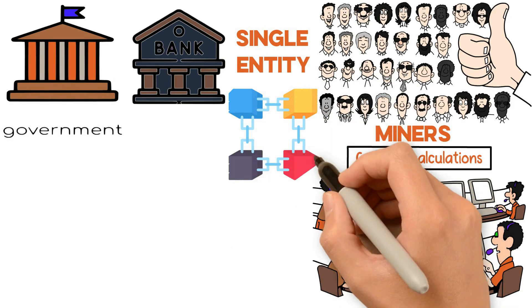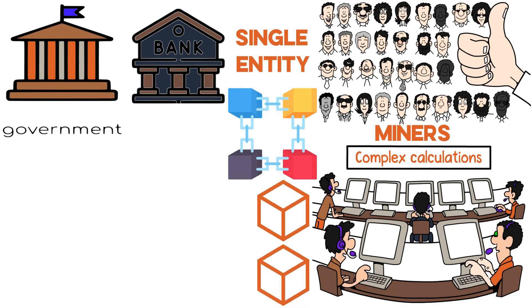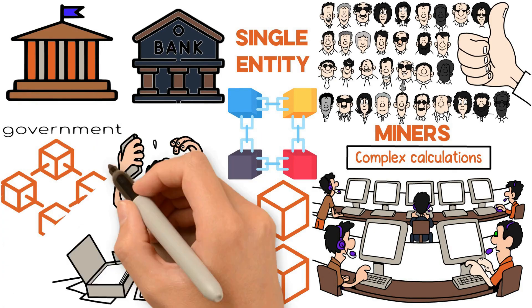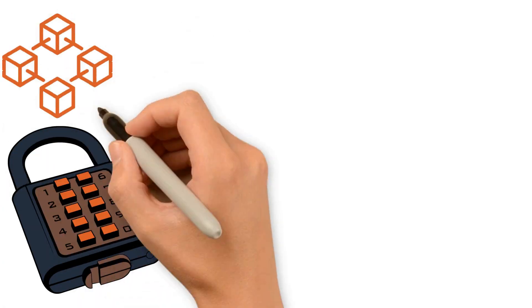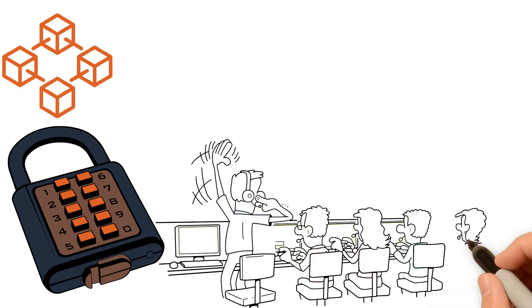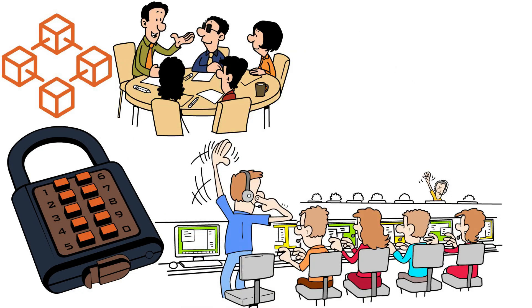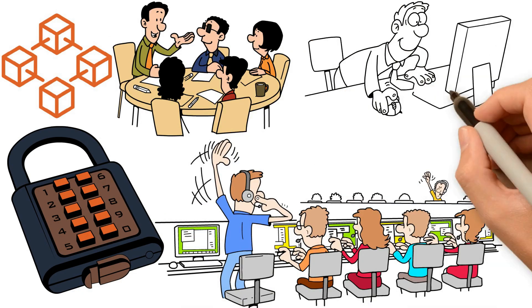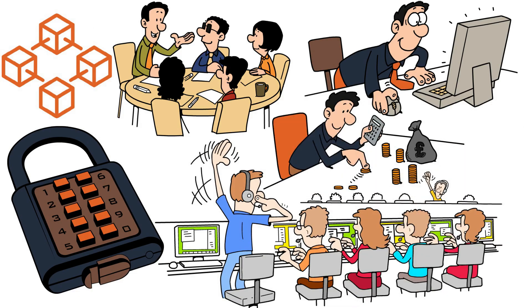This means that no single entity such as a government or bank controls it. The users on this P2P network are called miners and their work is called mining. Miners use powerful computers and an internet connection to solve complex calculations in real time, which are then added to the blockchain as a block. The more blocks that get added to the chain, the harder it becomes for miners to add new blocks because of its immutability.